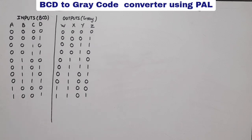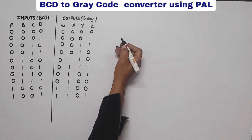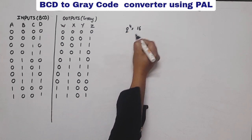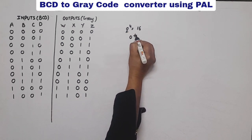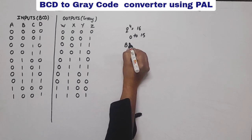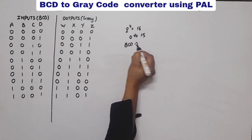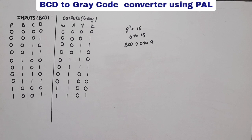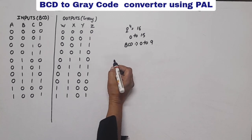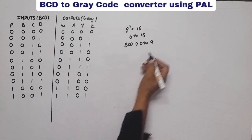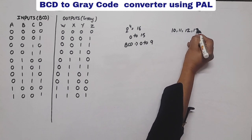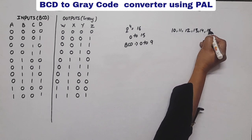The total number of possibilities is 2 to the power of 4, which equals 16 — meaning 0 to 15. But our BCD numbers are only 0 to 9, so the remaining entries — that is, 10, 11, 12, 13, 14, and 15 — will be our don't care conditions.